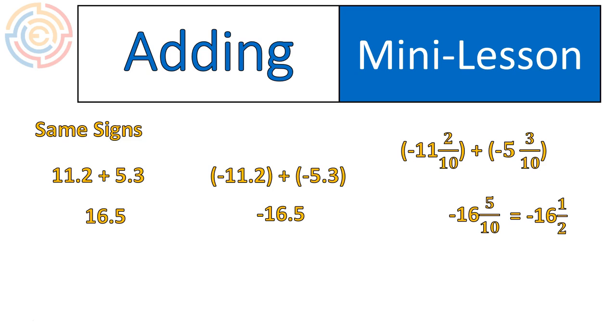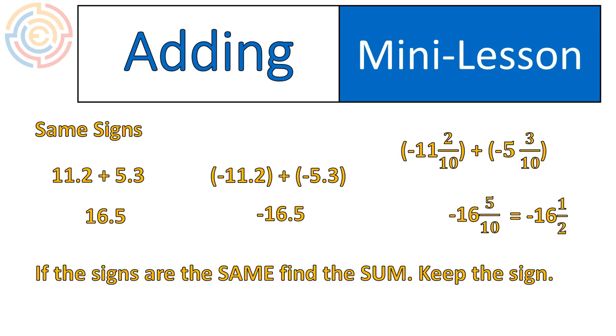Notice all three of these questions are basically the same. They're just written in slightly different ways. But it shows every time that if the signs are the same, you find the sum and keep the sign. In other words, if it's a positive plus a positive, you end up with a positive. If it's a negative plus a negative, add the numbers together, keep the sign as a negative.